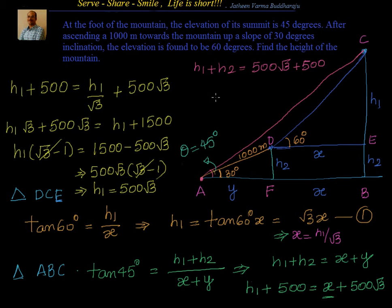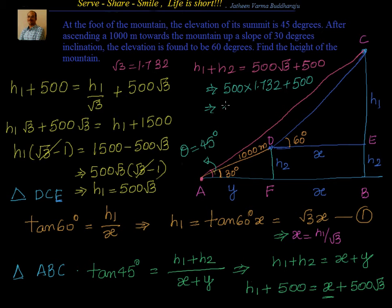The total height is H1 plus H2 — that is 500 root 3 plus 500, or 500 times (root 3 plus 1). Root 3 is 1.732, so that equals 500 times 1.732 plus 500, which gives 866 plus 500 equals 1366 meters — the total height of the mountain.